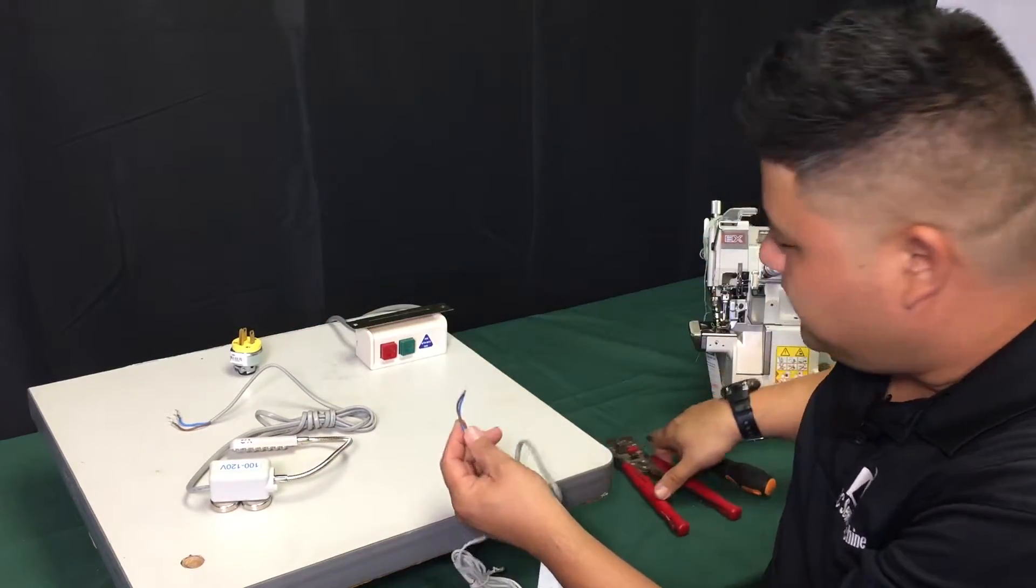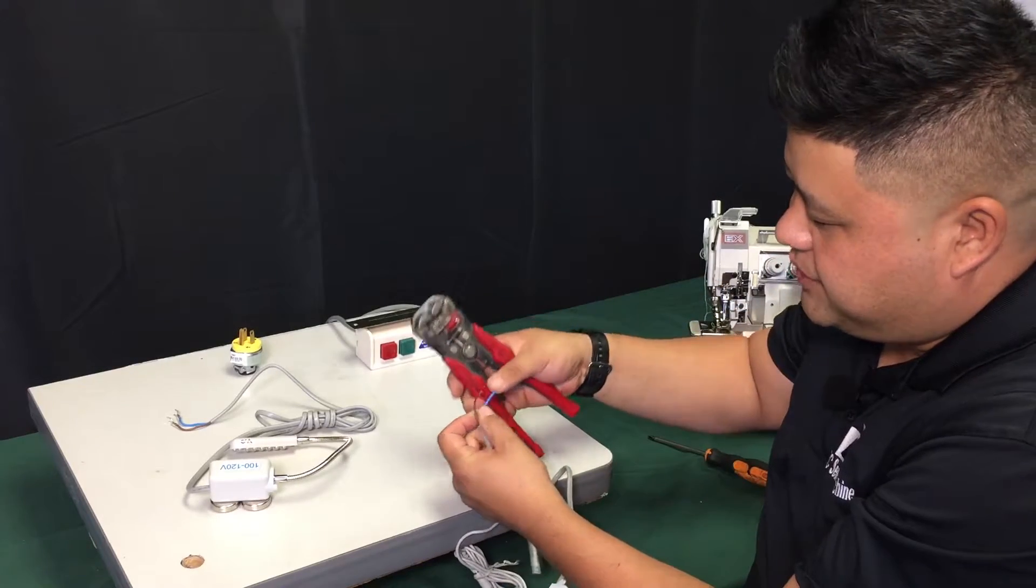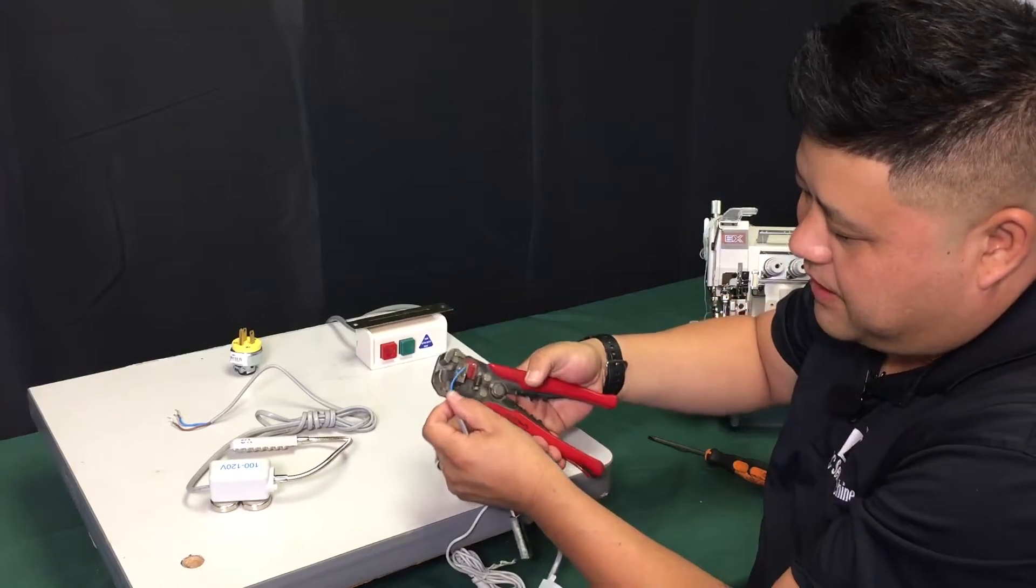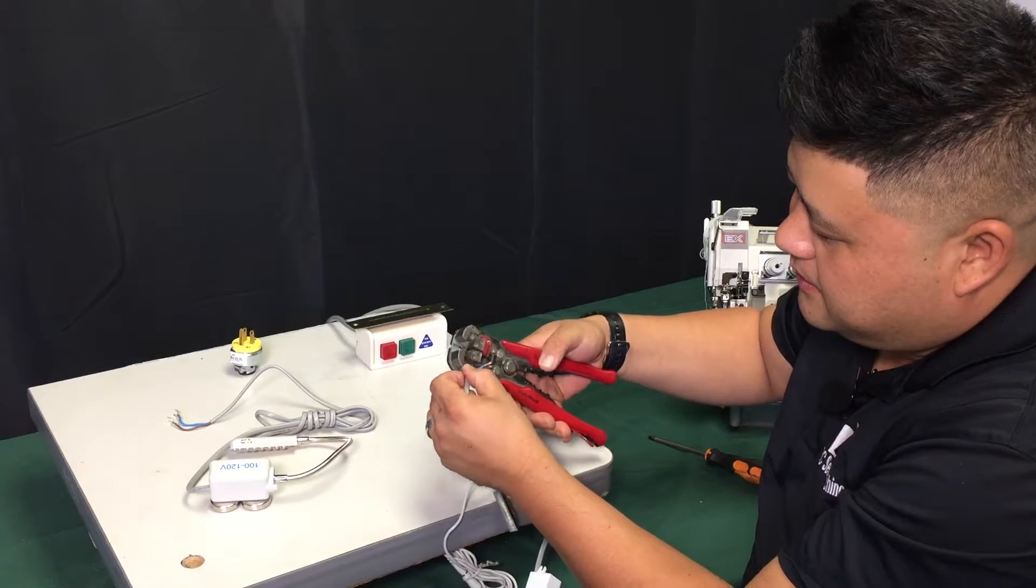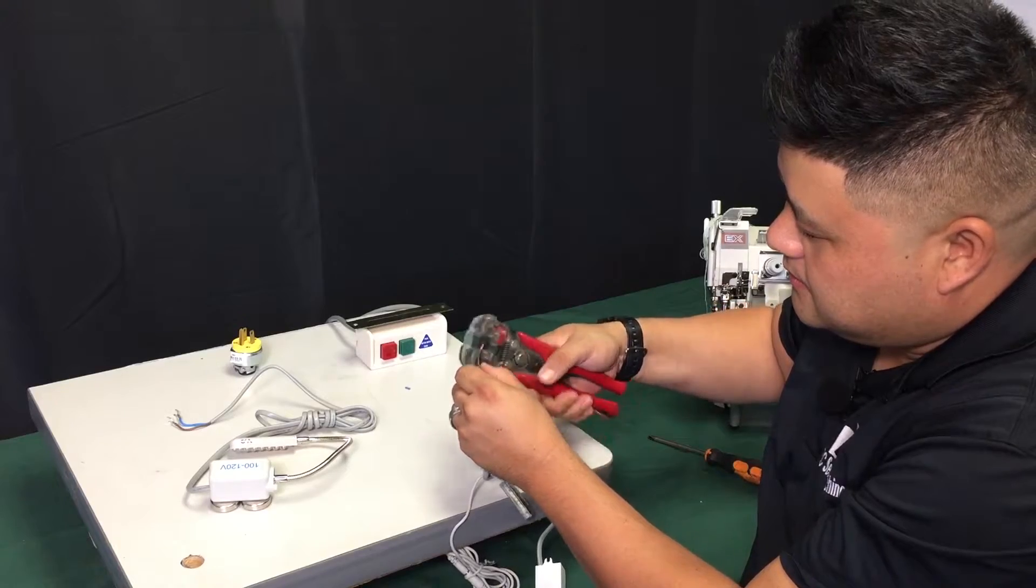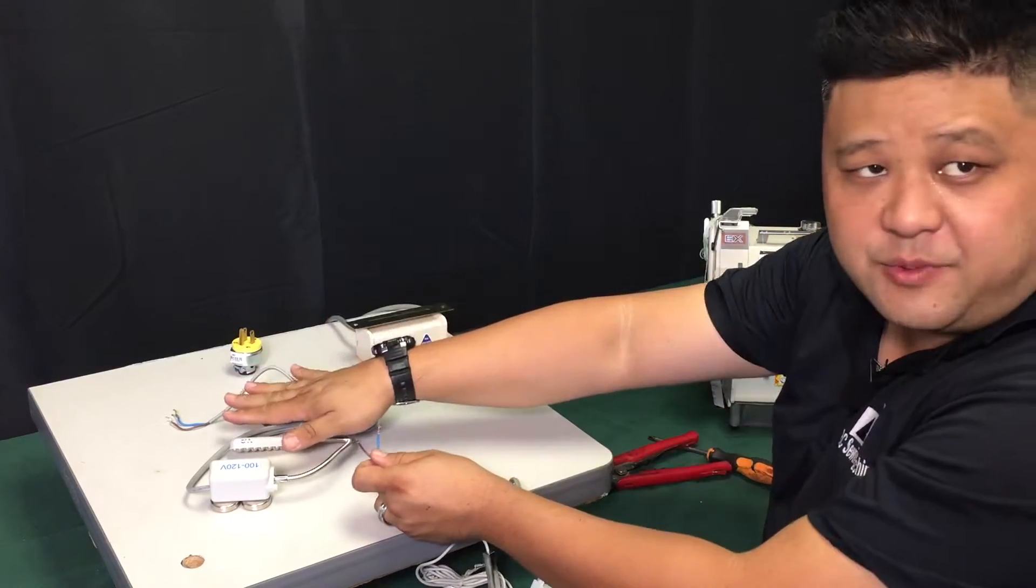When installing the single line, you're going to need some kind of wire stripper. We have one right here that we got from Radio Shack, and just expose the wires as so. And then you would actually just install the same way as you would this one.